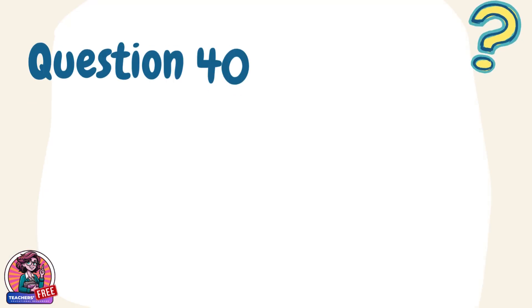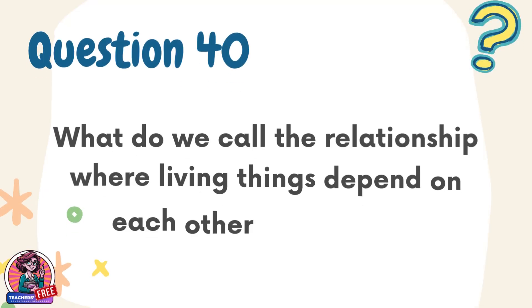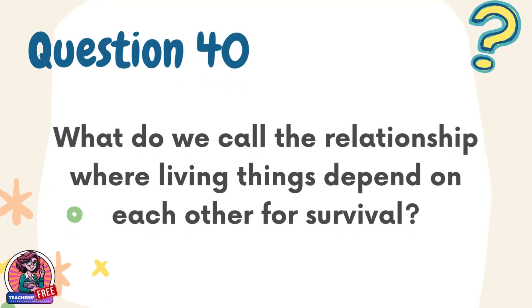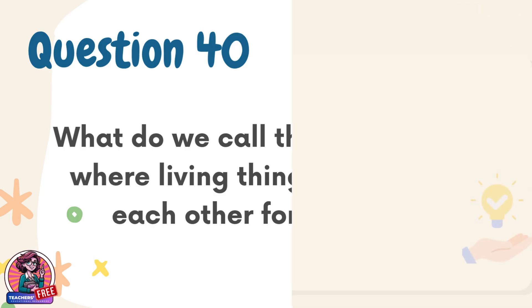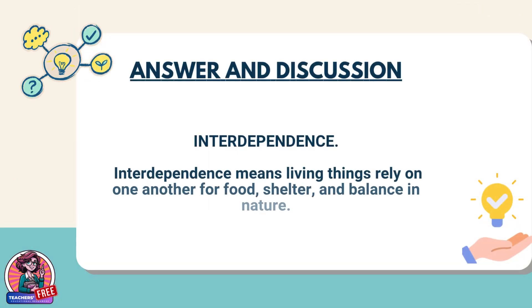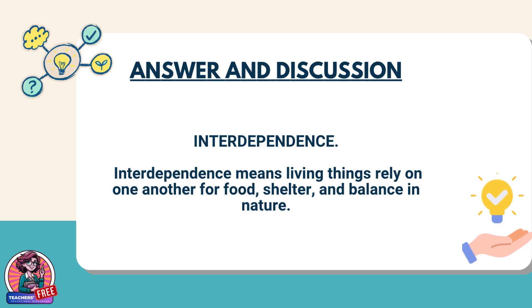Question 40. What do we call the relationship where living things depend on each other for survival? Answer: Interdependence. Interdependence means living things rely on one another for food, shelter, and balance in nature.